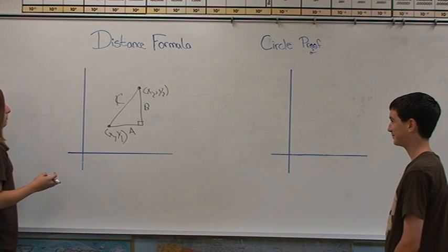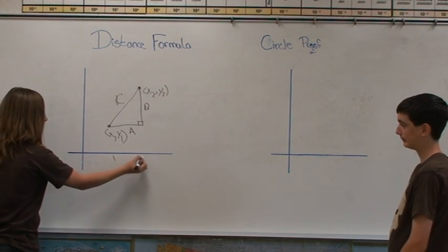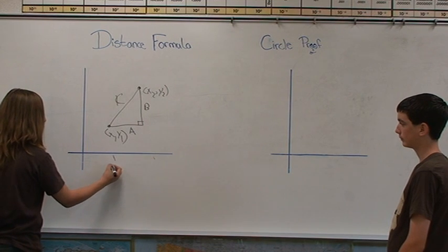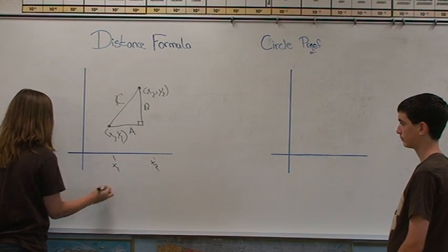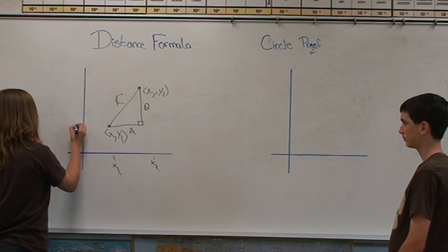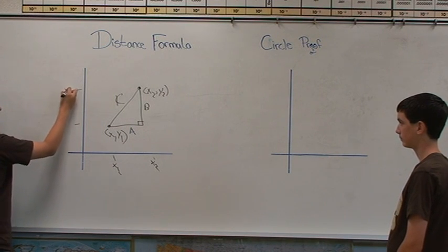Now we need to find out what the leg A is. Leg A can be represented by a one dimensional distance on the x axis. x1 is that point and x2 is the other point. Let's do the y2 and y1's also for the one dimensional distance to find the leg of B.